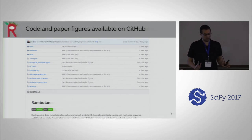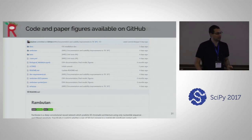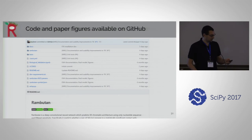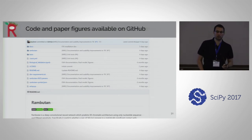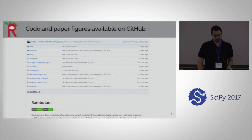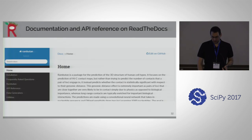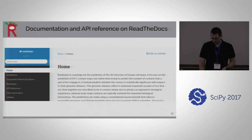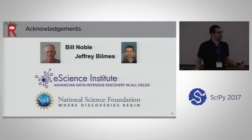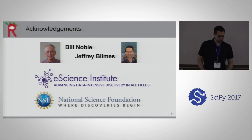All the code is available on my GitHub for public use. The biological validation notebook recreates all of the figures in the paper, which is currently under revisions at Bioinformatics. All documentation and API reference for all the methods are available on Read the Docs. I'd like to thank my advisors and the eScience Institute for funding my travel.